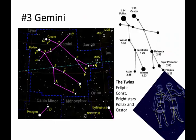The next one is Gemini. Gemini is for the twins — two brothers, Pollux and Castor. Pollux and Castor are these two very bright stars, and they are supposed to be two brothers with an arm around each other. They kind of look like two stickmen standing very close together. Castor is the alpha star and Pollux is the beta star — those are the two brightest stars in the Gemini constellation.